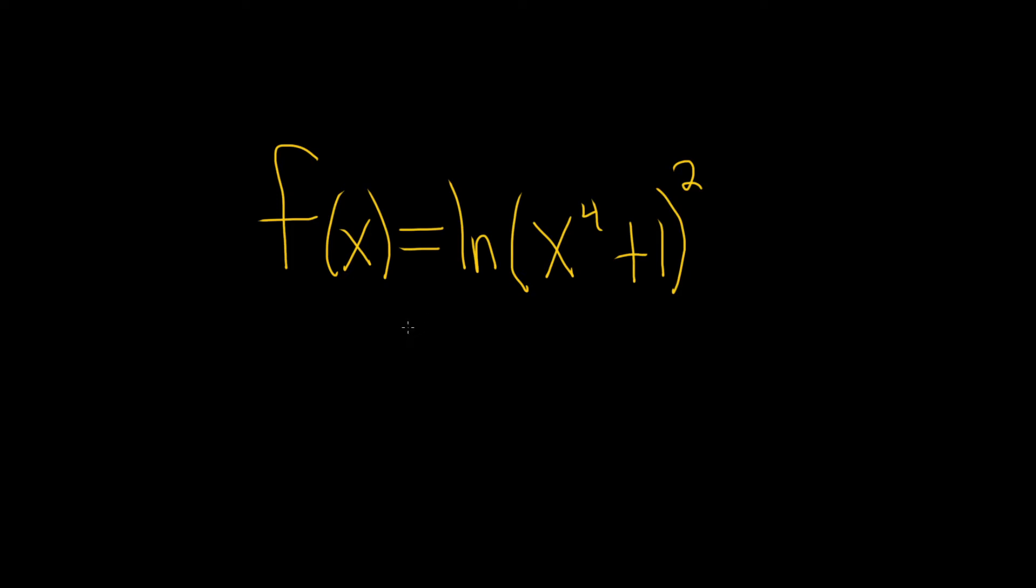We have to find the derivative of the natural log of x to the fourth plus one, and it's being squared here. So the squared is on the argument, it's on the x to the fourth plus one piece.